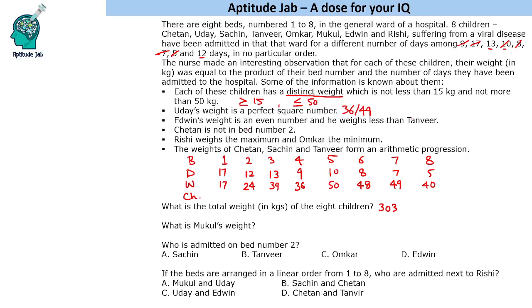Okay, multiple possibilities. Chetan is not in bed number 2. Fine. Rishi weighs the maximum. So this is Rishi and Omkar the minimum. So two people we have filled. Omkar and Rishi.